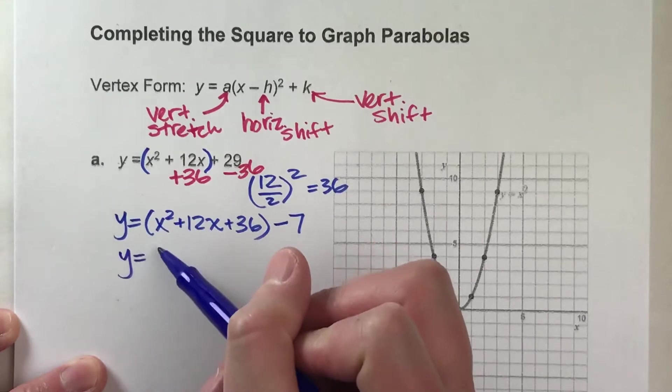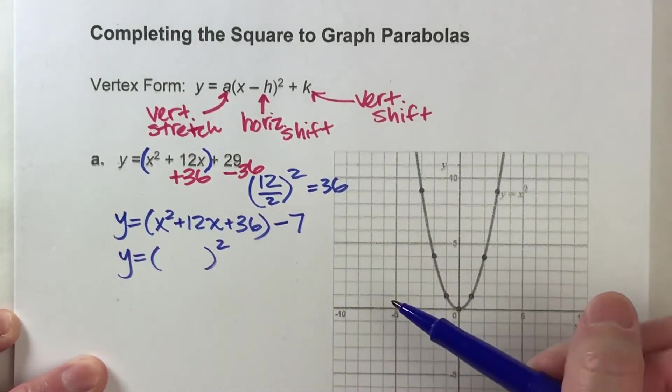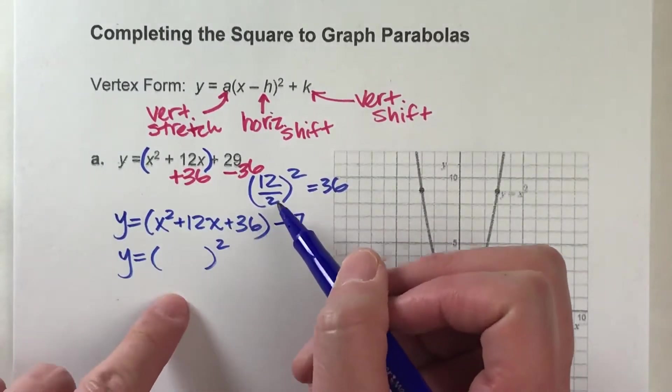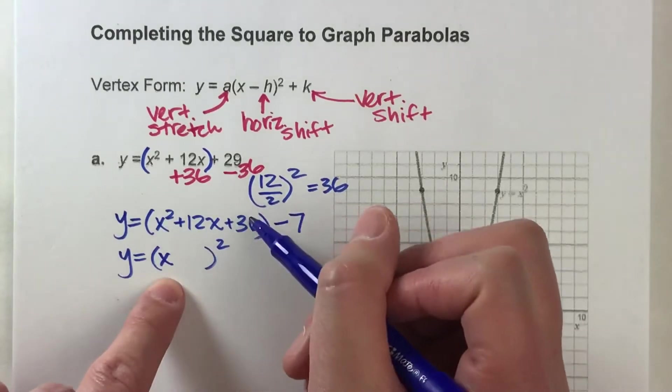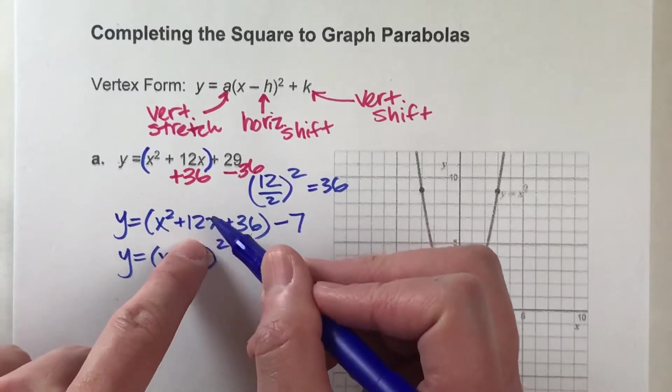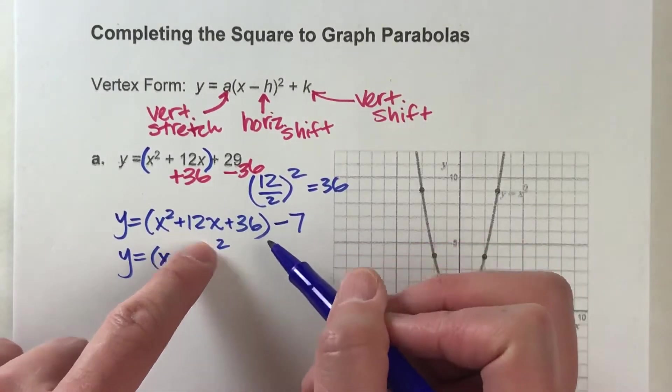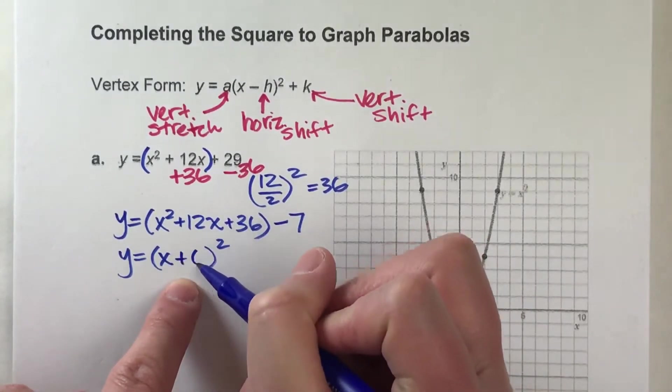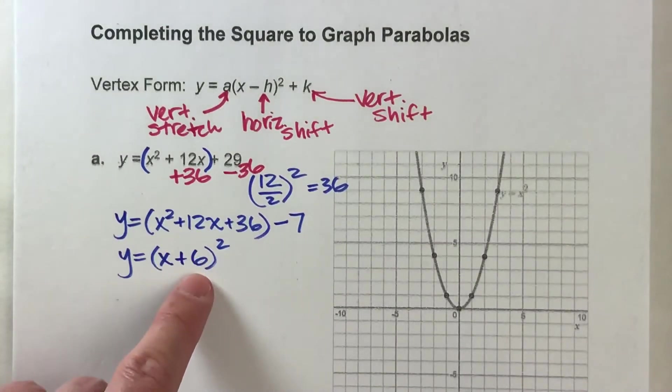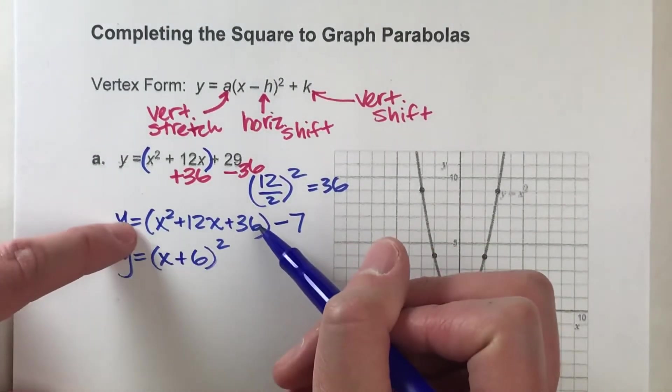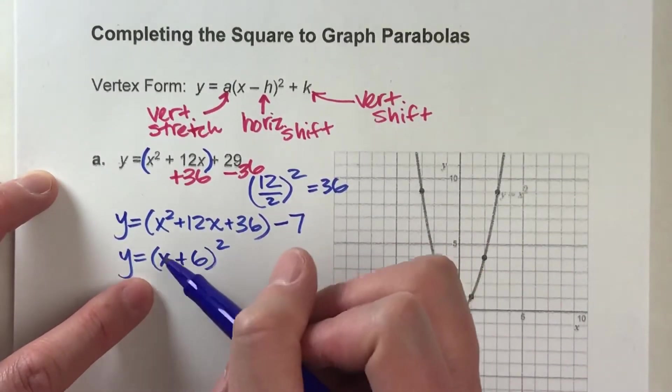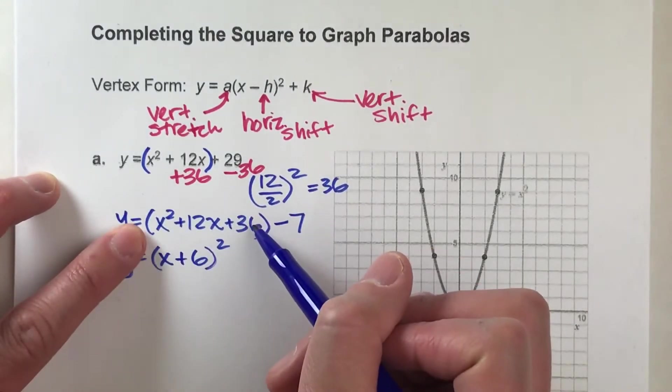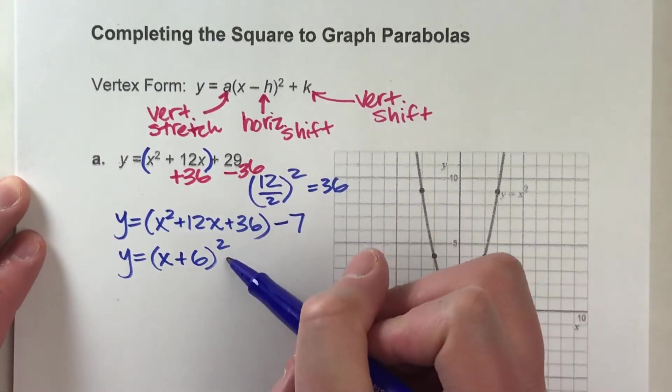Now, here's the key. All this stuff in parentheses is a perfect square. And we know that because we specifically put in 36 because it would be a perfect square. And the way we find this perfect square is we have to either take the number next to x and divide it by 2, which is 6, or we can square root this number on the end, which is also 6. And that will tell us inside the parentheses would be x plus 6. So x plus 6 squared is equal to this. And I'm going to tack on the minus 7 at the end.